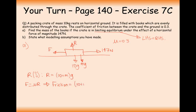Resolving horizontally: leftward forces equal rightward forces, so 147 equals 3g plus 0.3mg. Taking away 3g from both sides and dividing by 0.3g, we get m equals 40 kilograms. So 40 kilograms is the mass of the books.